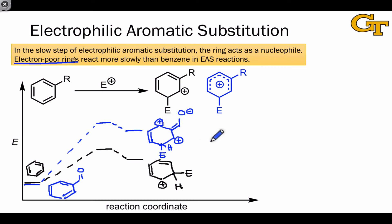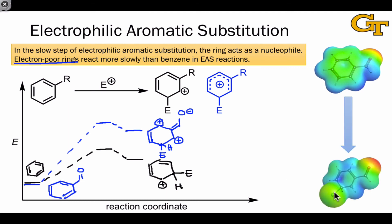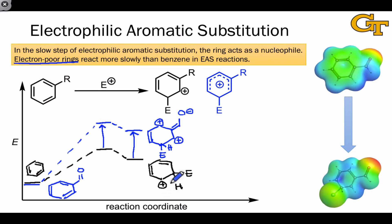This suggests that the electron density within the ring is extremely low. If we look at the electrostatic potential map for benzaldehyde — already an electron-deficient ring — the coordination of an electrophile such as chlorine causes an even greater drain of electron density from the ring. The dark blue spot in the center of the ring indicates a severe lack of electron density within that aromatic ring. This is why, relative to benzene, this sigma-complex is less stable and the corresponding transition state is also higher in energy. This causes electron-poor rings to react more slowly than benzene in electrophilic aromatic substitution reactions.